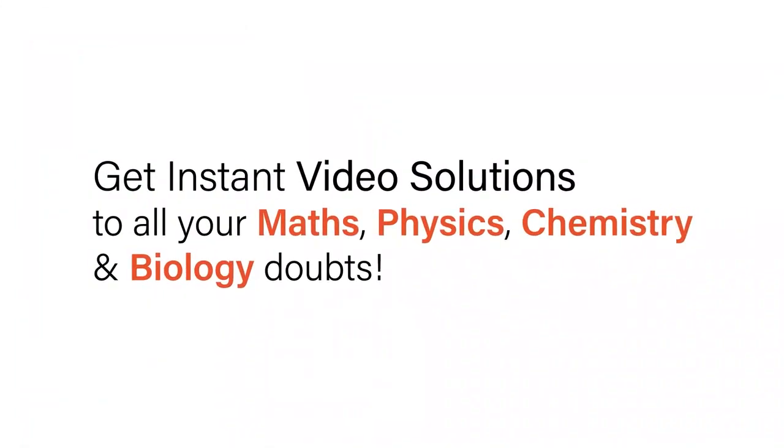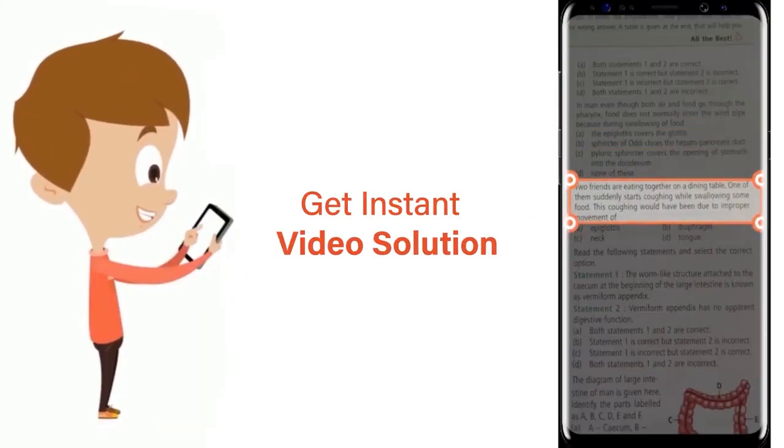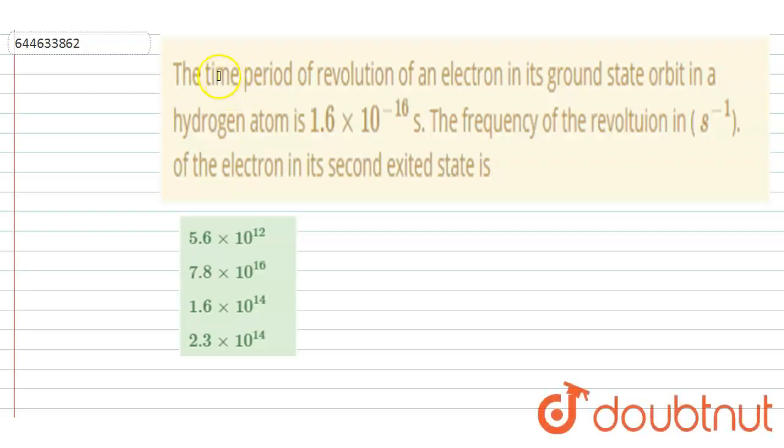With Doubtnet, get instant video solutions to all your maths, physics, chemistry, and biology doubts. Just click the image of the question, crop the question, and get instant video solution. Download Doubtnet app today. Hello everyone, time period of revolution of an electron in its ground state orbit is given here.